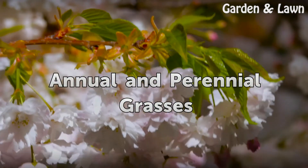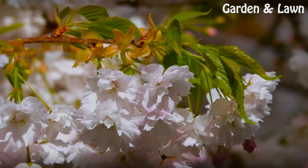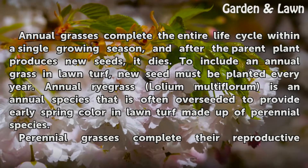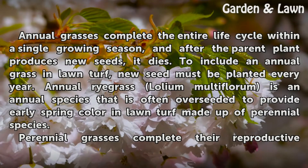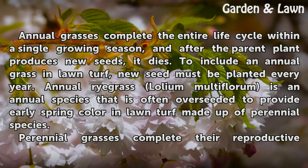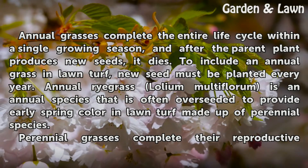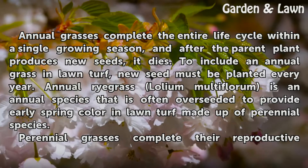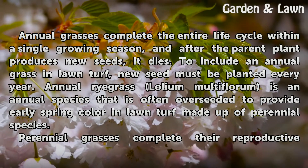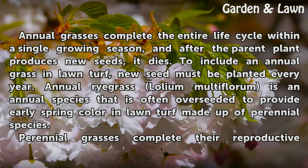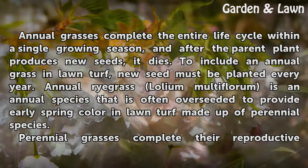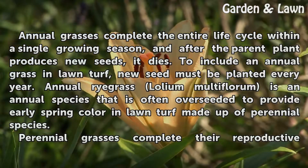Annual and perennial grasses. Annual grasses complete the entire life cycle within a single growing season, and after the parent plant produces new seeds, it dies. To include an annual grass in lawn turf, new seed must be planted every year. Annual ryegrass (Lolium multiflorum) is an annual species that is often overseeded to provide early spring color in lawn turf made up of perennial species.